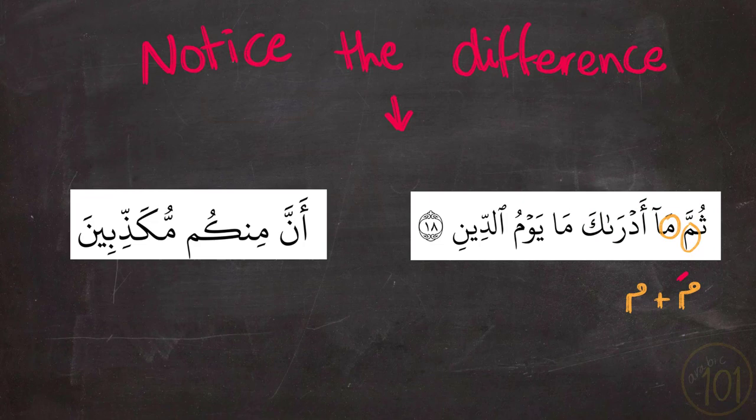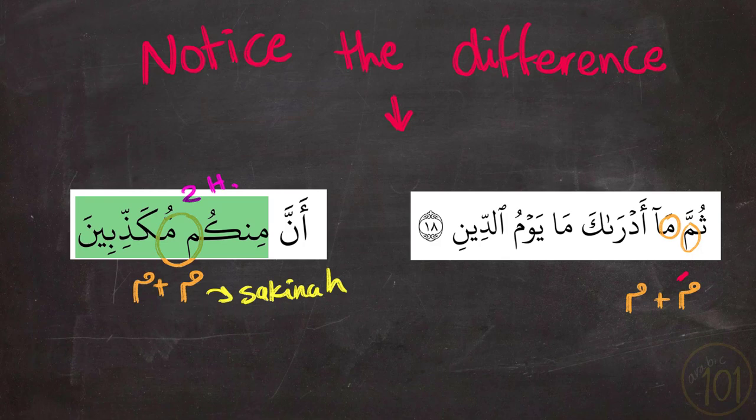We have to separate them and say ثُمَّ مَا. The second example, however, the Meem Sakina was first. So in this case, you can safely merge them into one Meem and say مِنْكُمْ مُكَذِّبِينَ.